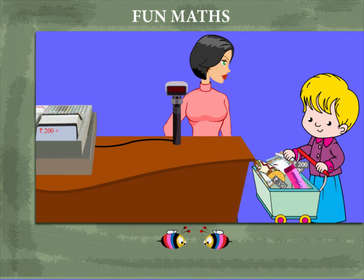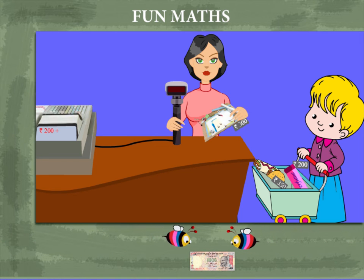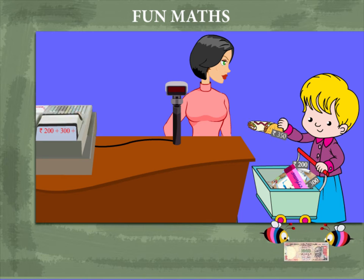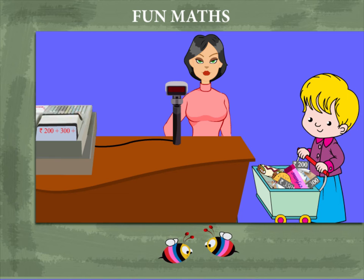Rinki hands over the stationery packet worth 300 rupees for billing. She now hands over the third item worth rupees 350 to the billing clerk. The cash register at the store bills Rinki by adding the cost of her items.